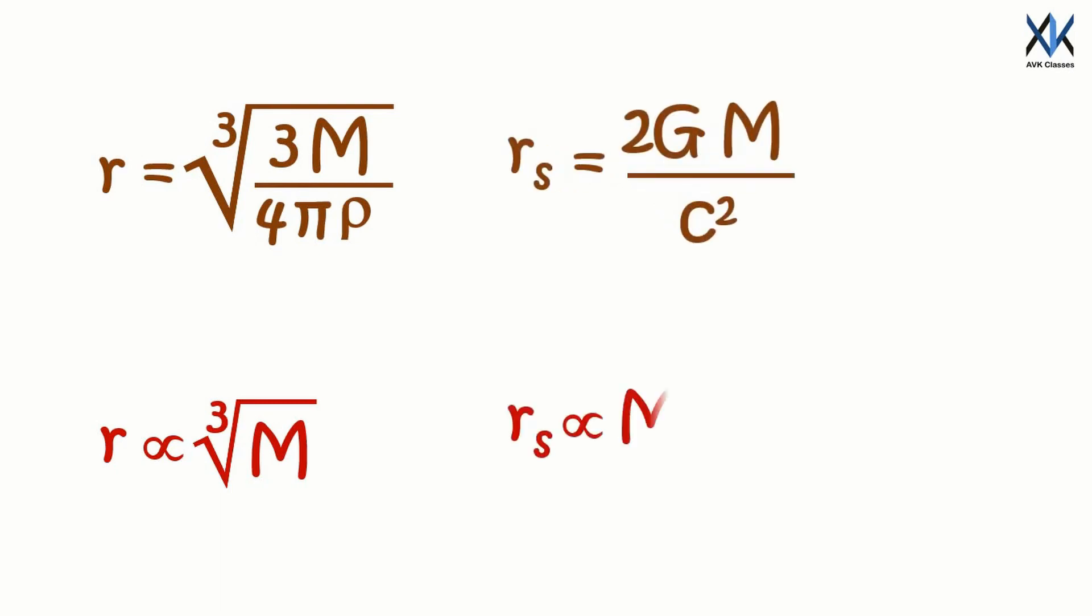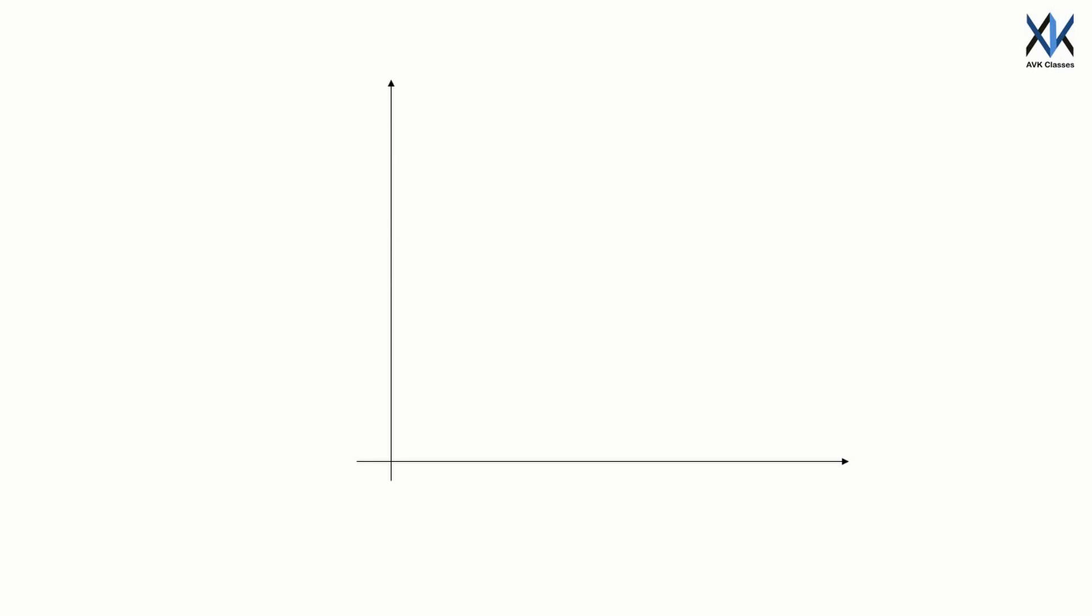And as stated earlier, Schwarzschild radius of an object is proportional to its mass. So on adding mass, the Schwarzschild radius of an object will increase much faster than its actual radius. Initially the Schwarzschild radius of an object is very small compared to its actual radius.